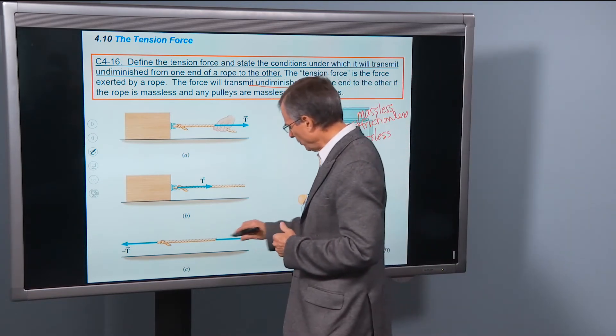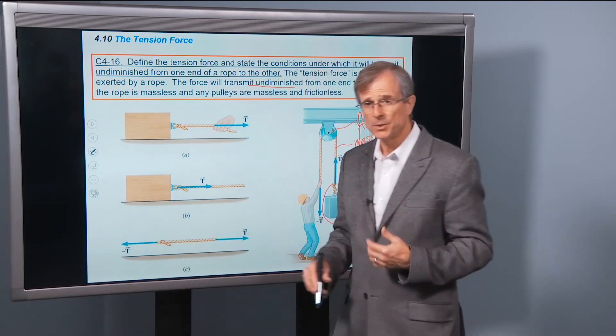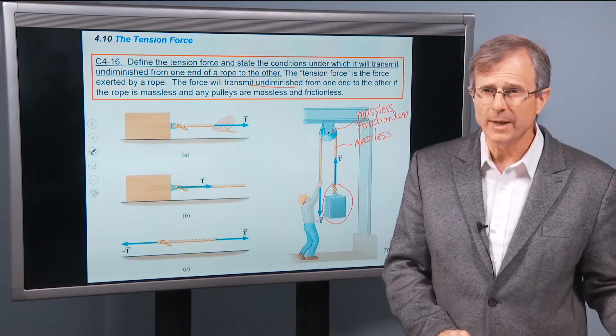The tension on one side of the rope is equal to the tension. The magnitude of the tensions are the same on either end of the rope.